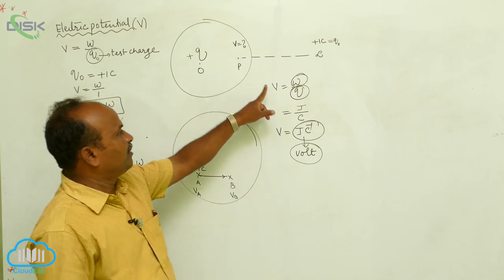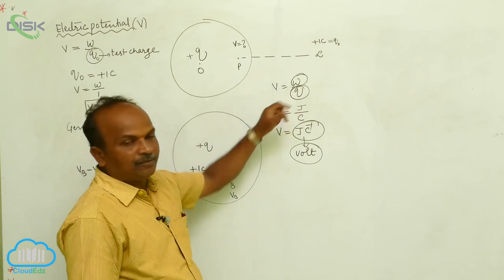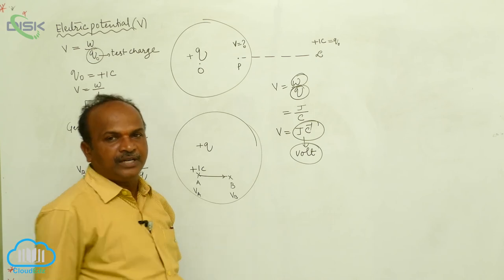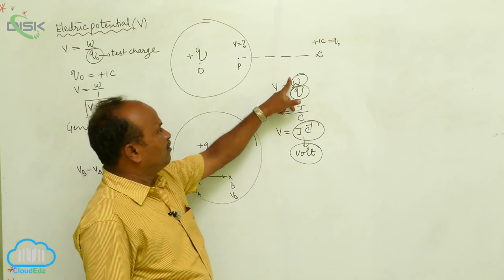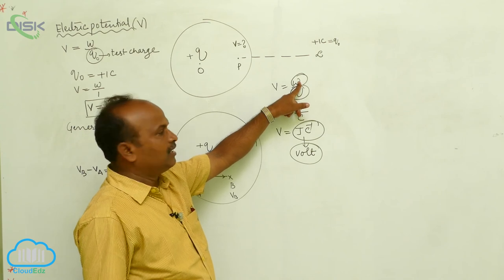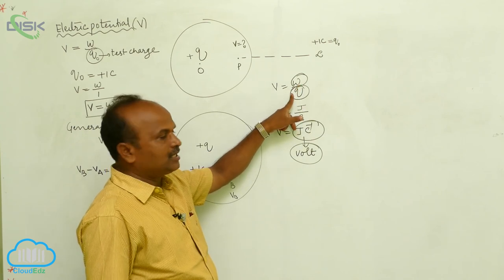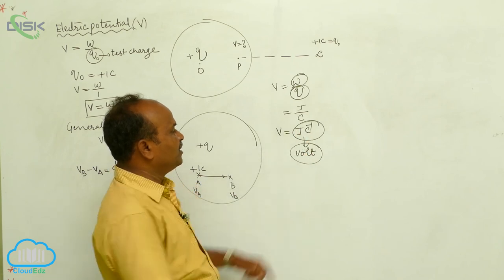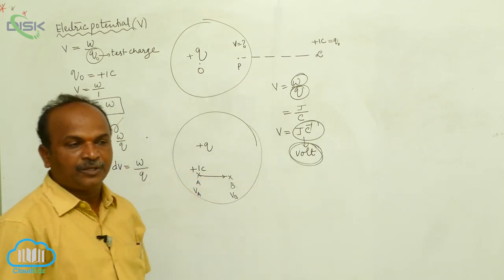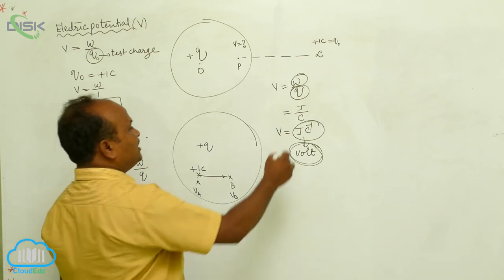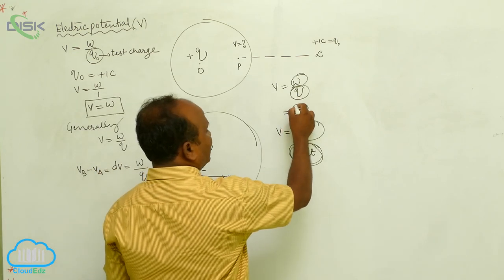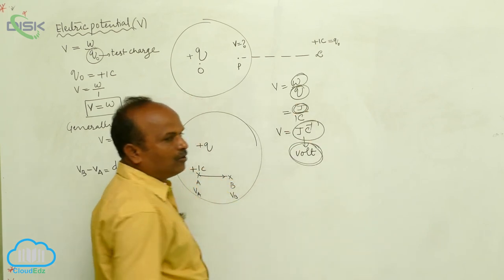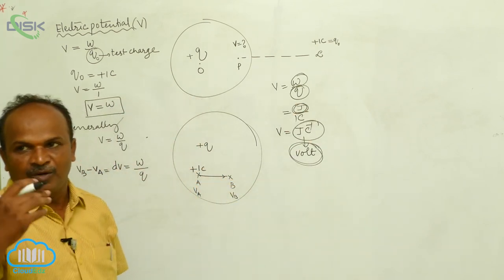The general formula is V = W/Q. W is the work done in Joules, Q is the charge in Coulombs. Joules per Coulomb is known as Volt. One Volt is defined as: if one Joule of work is done in moving one Coulomb of charge between any two points, then the potential difference is said to be one Volt.